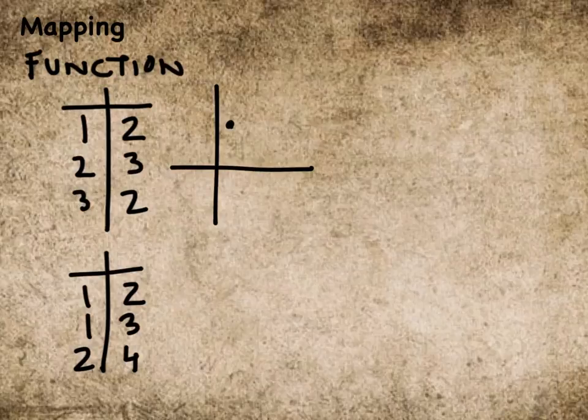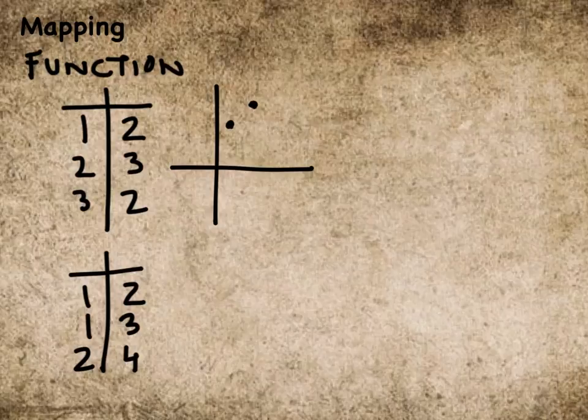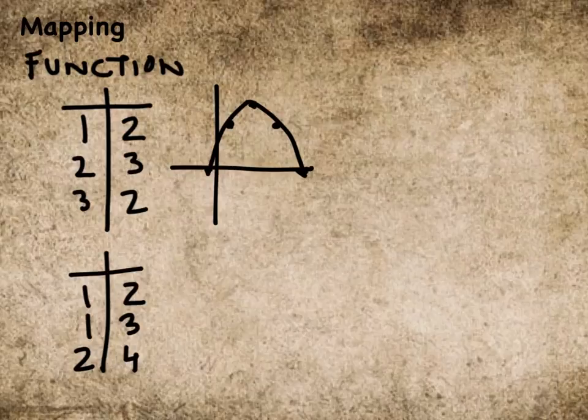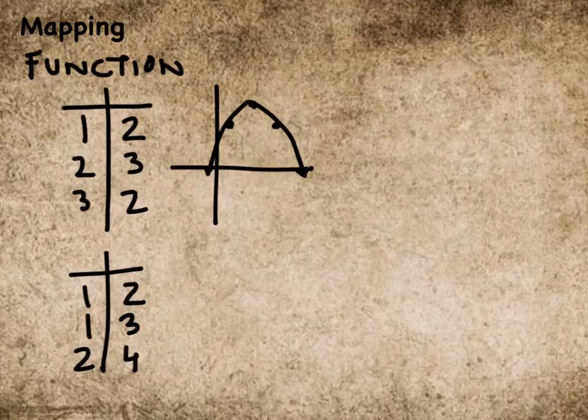If I was to graph this, you'd get 1 and 2, 2 and 3, 3 and 2. Maybe this is a parabola we're forming. This is a very normal function, and the idea that it can use the same Y value is perfectly fine.